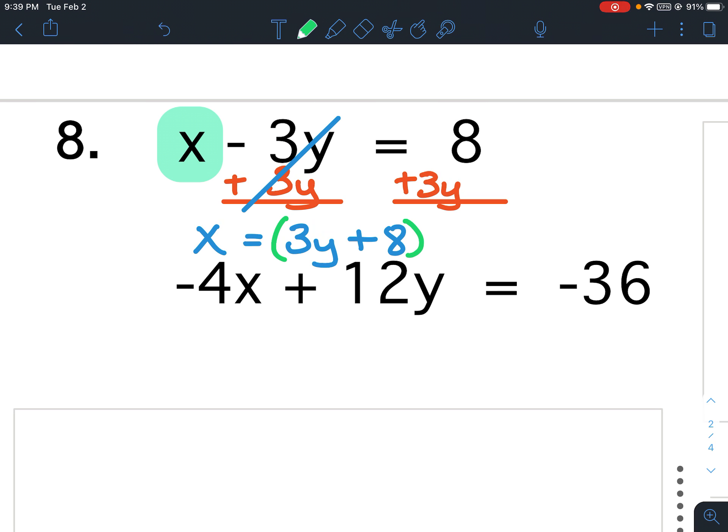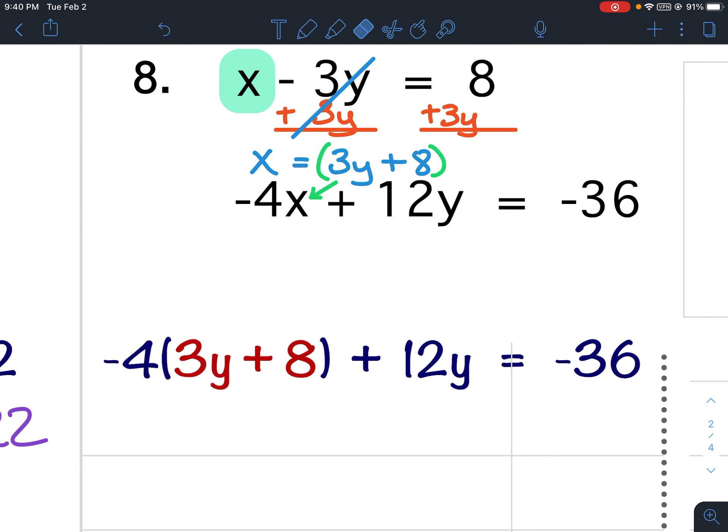Now, what equals x, we'll substitute in for the bottom x. I solve for the top x, I substitute it into the bottom x. Solve for the top x, substitute it in for the bottom x, so that would look like this: negative 4 times the quantity 3y plus 8, and then we've got plus 12y equals negative 36.